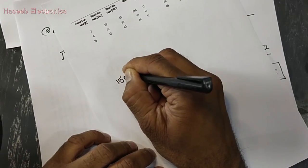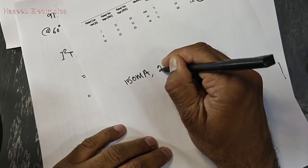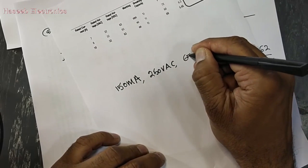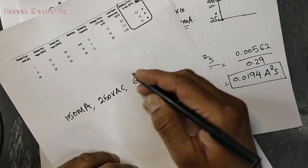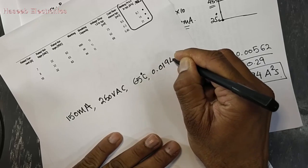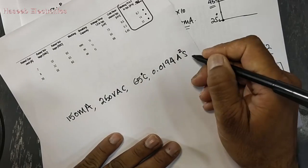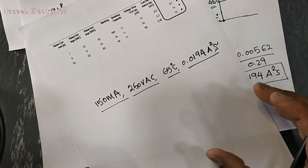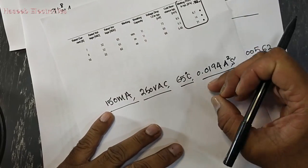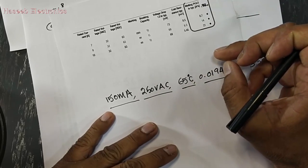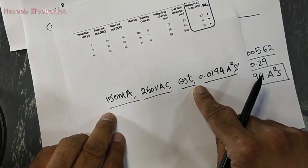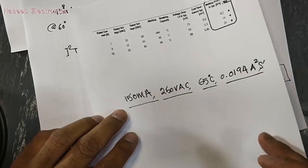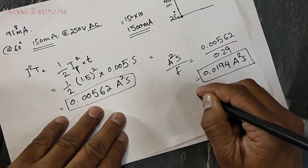To summarize the fuse parameters: 150 milliampere — first parameter; 250 volt AC — second; 65 degrees centigrade — third; and 0.0194 A²s melting point — fourth. These are the basic parameters for fuse selection. You can then go to any fuse selection tool or catalog, select these parameters and the melting point, and find the correct part number.